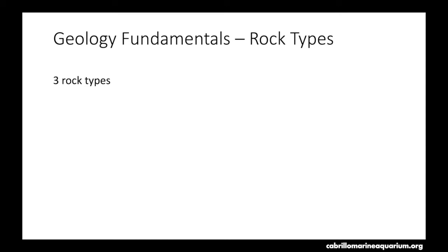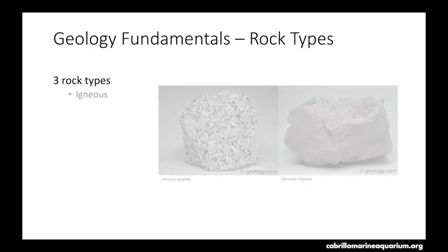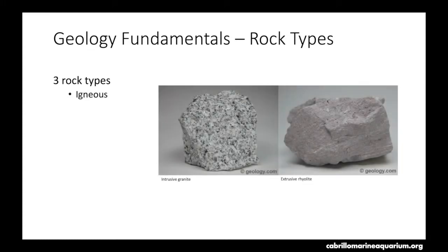We'll begin geology fundamentals by talking about the rock types. There are three main rock types and we will begin by talking about igneous rocks. Within igneous rocks, there are two main types: intrusive igneous rocks and extrusive igneous rocks. Intrusive igneous rocks form within the ground, within the surface of the earth, formed by cooling magma chambers. Extrusive rocks are formed from cooling lava on the outside of earth — extrusive, external.